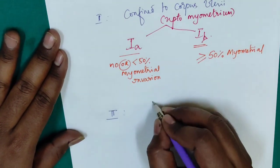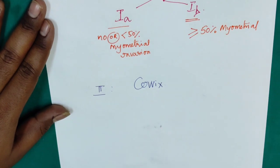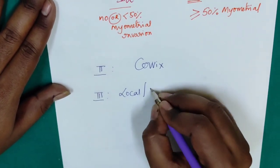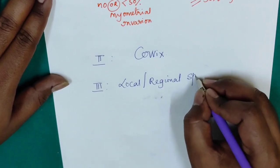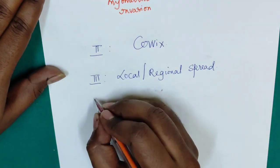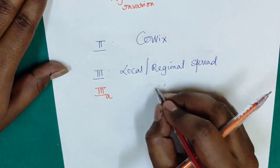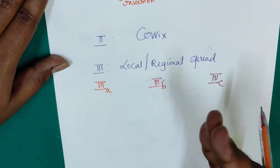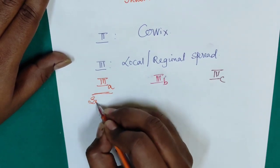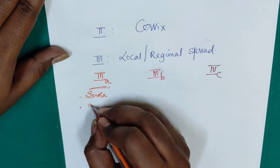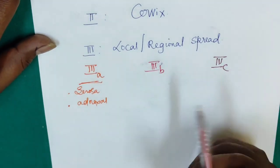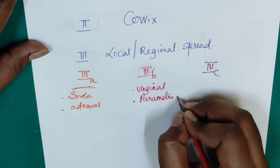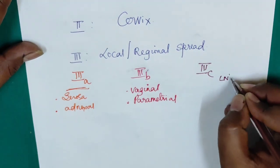Stage 2 involves cervix. Stage 3 is local or regional spread. This local or regional spread is divided into 3a, 3b, and 3c. Stage 3a is serosal involvement and adnexal involvement. Stage 3b is vaginal involvement and parametrial involvement. Stage 3c — lymph nodes positive.